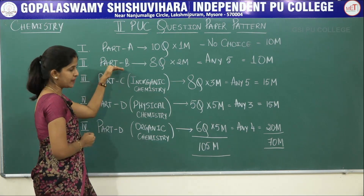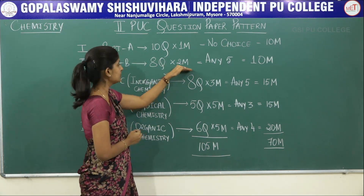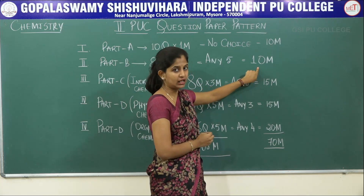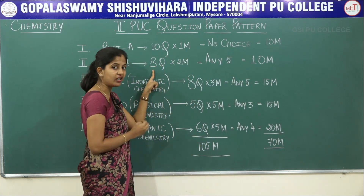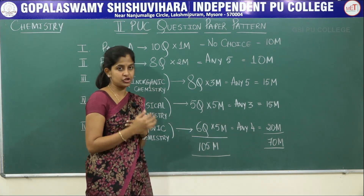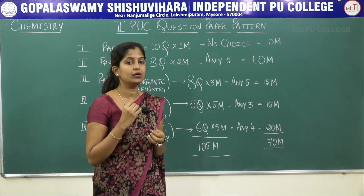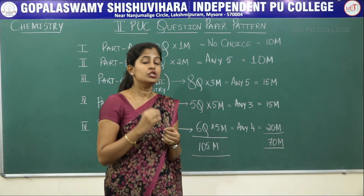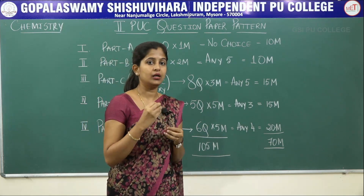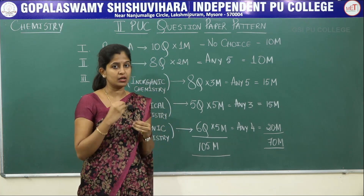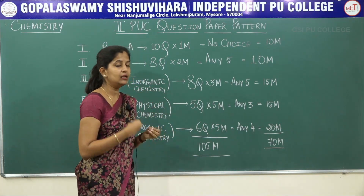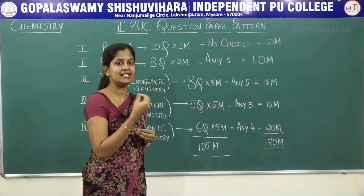The second main is Part B. Part B has two-mark questions; there will be eight questions, of which you have to attempt five. Five questions into two marks gives a total weightage of 10 marks. The paper is set for eight questions, among which you have a choice of three, and you attempt only five. Part B is again a mixture of all three branches — physical chemistry, organic chemistry, as well as inorganic chemistry.